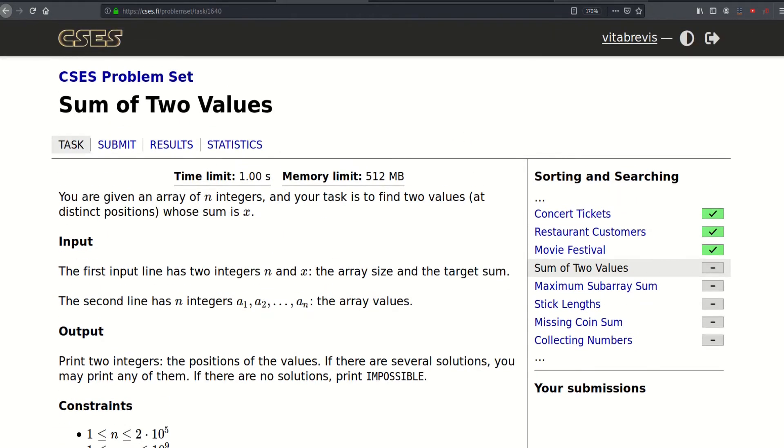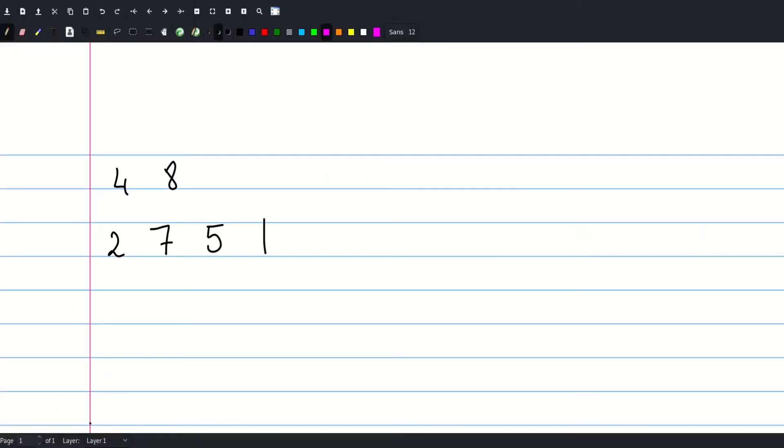So let's think about the problem. This is our example. First of all let's think of a brute force approach. So basically we need to find i and j such that ai plus aj is equal to 8.